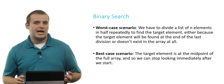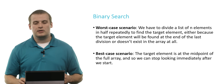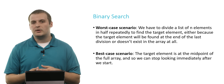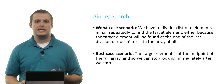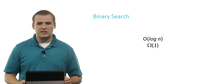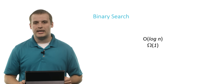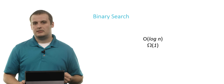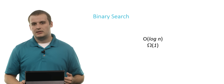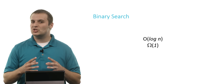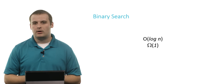What's the best case scenario? The first time we calculate the midpoint, we find what we're looking for — for example, if we had been looking for 15, we would have found it immediately at the very first midpoint. So in the worst case, binary search runs in O(log n), which is substantially better than linear search. In the best case, binary search runs in Ω(1). Binary search is a lot better than linear search, but you have to sort your array first. I'm Doug Lloyd — this is CS50.